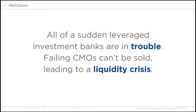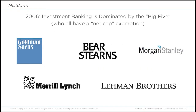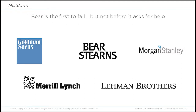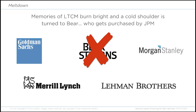The market for CMOs dried up overnight. Since the banks couldn't trade in their most popular product, they hit a major liquidity crisis. Investing at this time was dominated by the Big Five: Goldman Sachs, Bear Stearns, Morgan Stanley, Merrill Lynch, and Lehman Brothers. In March of 2008, Bear Stearns hit the wall with zero liquidity from its portfolio of CMOs. As it began to crumble, it sent out a distress call asking for help from its peers and the Federal Reserve Bank of New York. But memories of the cold shoulder that Bear gave to the LTCM bailout burned bright. Nobody stepped up to help Bear, except the Federal Reserve Bank of New York, which assisted in a sale of Bear Stearns to J.P. Morgan. On Monday, St. Patrick's Day of 2008, Bear Stearns sold to J.P. Morgan for $2 a share — a 98% discount to its trading price the previous Friday.